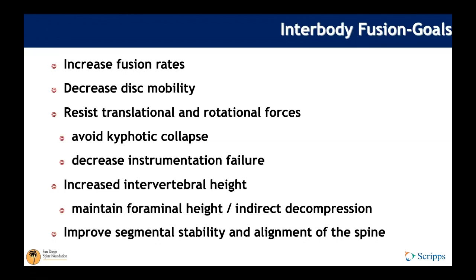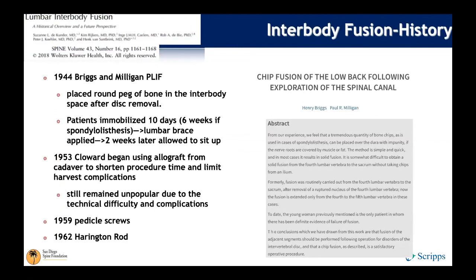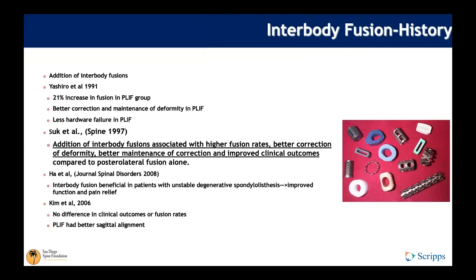In 1944, Briggs and Milligan first described the posterior lumbar interbody fusion, or PLIF — a round peg of bone placed in the interbody space after disc removal. In 1953, Cloward began using allograft for this procedure. It remained unpopular due to technical difficulties and complications through the 1950s and 60s.